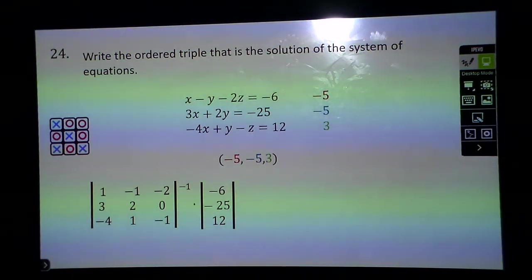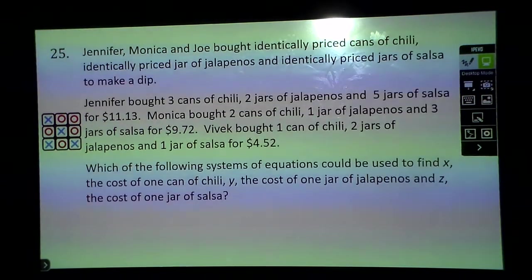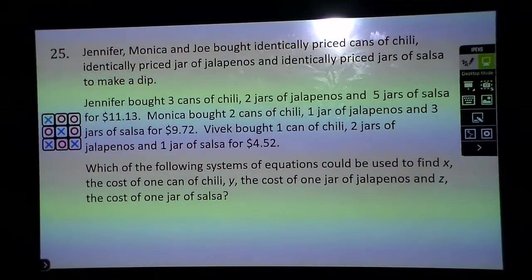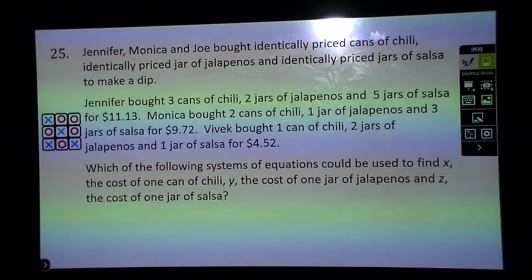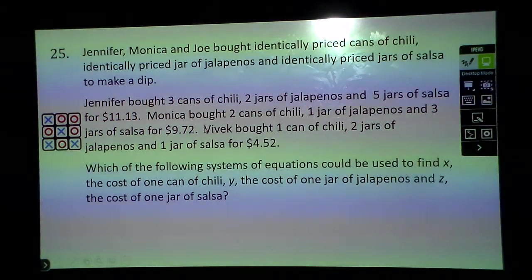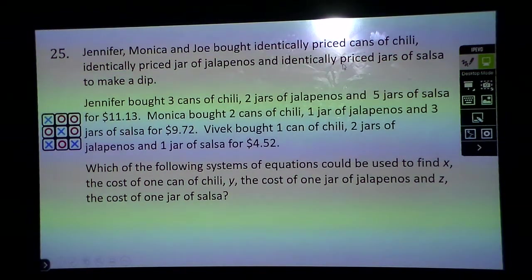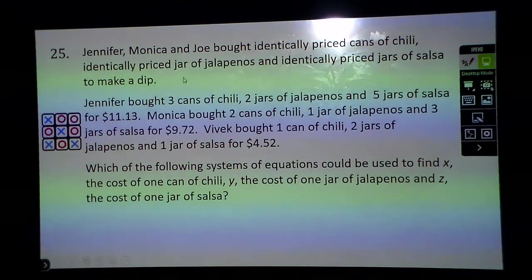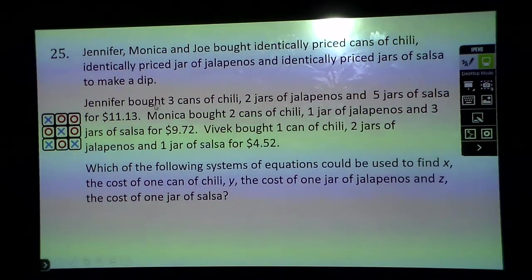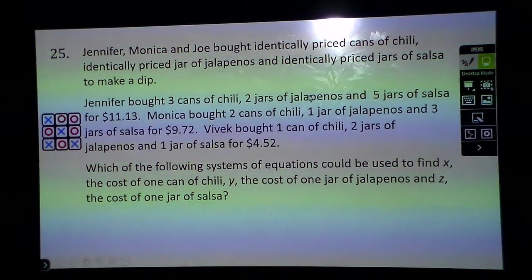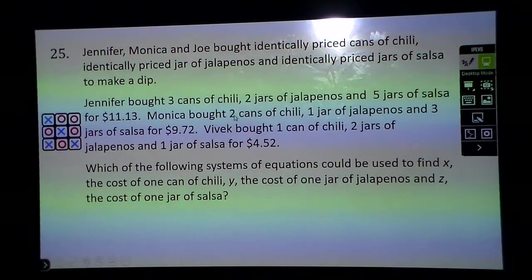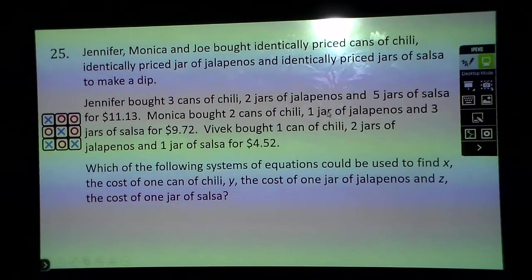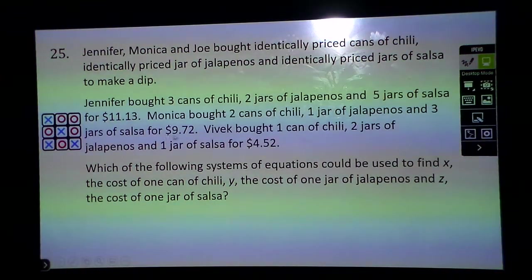Here we're going to actually set one up. We see Jennifer, Monica, and Joe bought identically priced cans of chili, identically priced jars of jalapenos, and identically priced jars of salsa to make a dip. Jennifer bought 3 cans of chili, 2 jars of jalapenos, and 5 jars of salsa for $11.13. Monica bought 2 cans of chili, 1 jar of jalapenos, and 3 jars of salsa for $9.72. Vivek bought 1 chili, 2 jars of jalapenos, and 1 jar of salsa for $4.52.